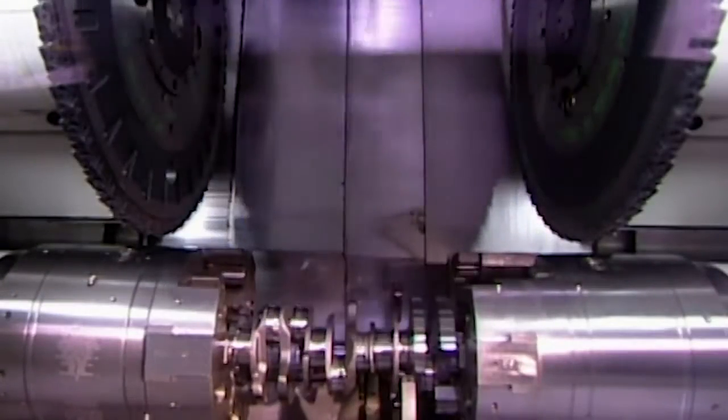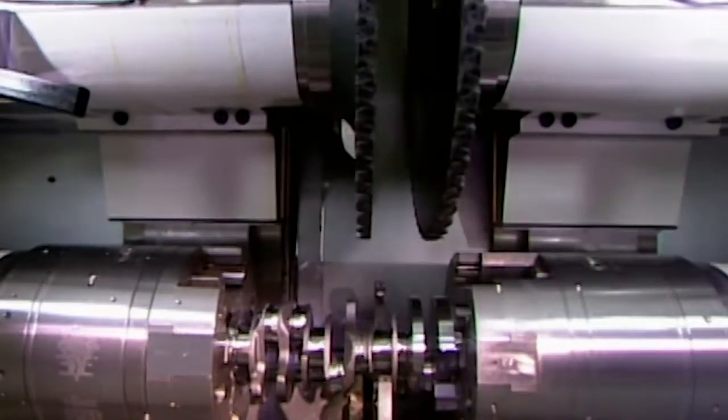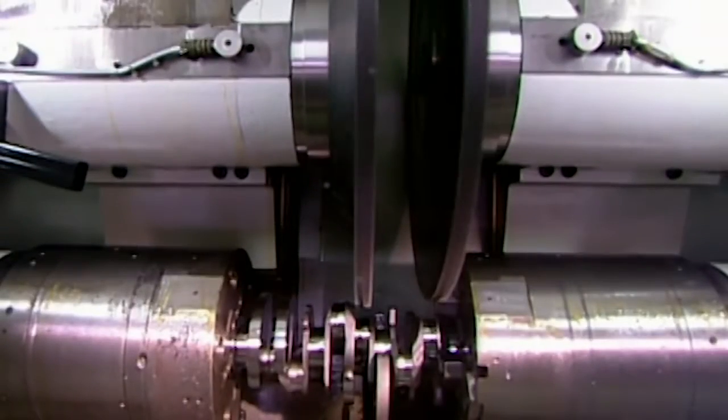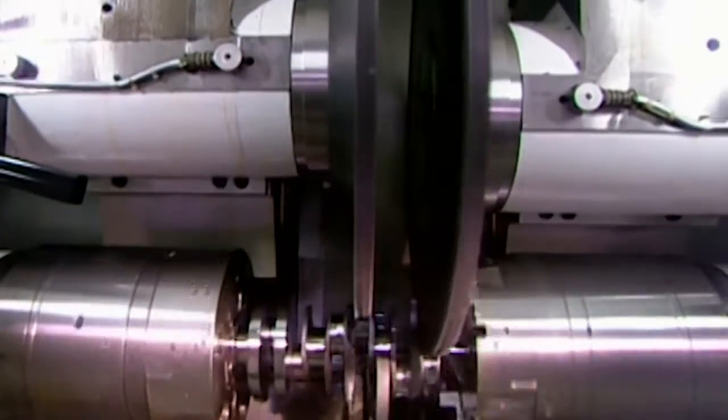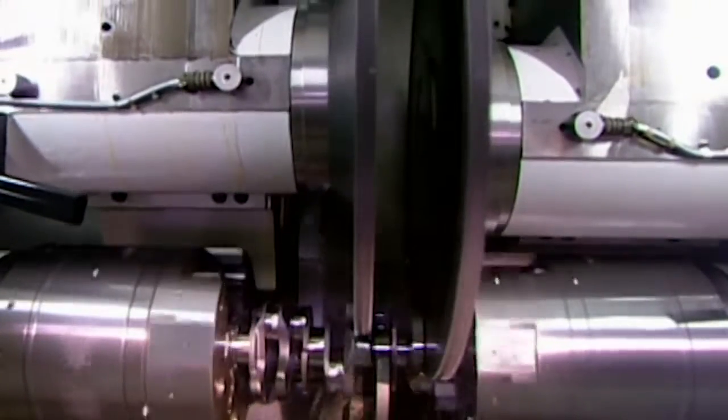The crankshaft starts out as a roughly shaped steel forging. Robotic arms pass it down the line from station to station until 20 tooling machines later it's fully formed.